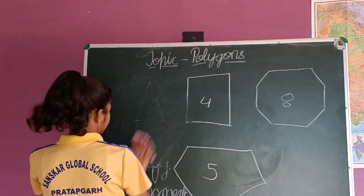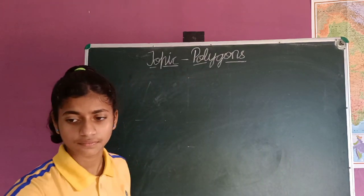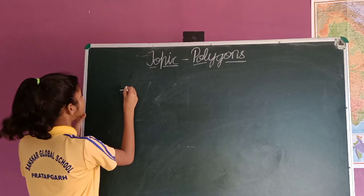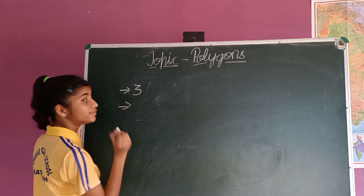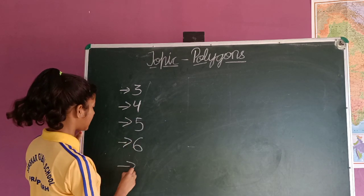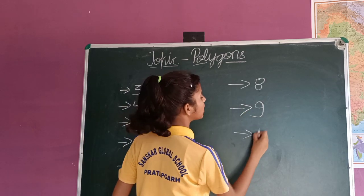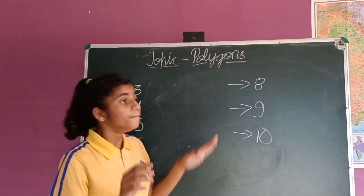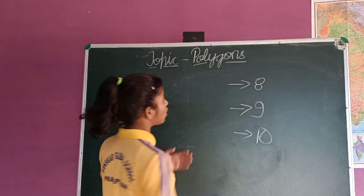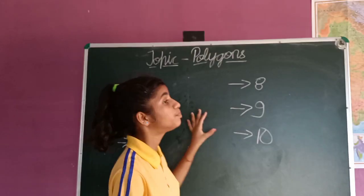Basically, polygons are classified on the basis of their number of sides. Let's learn them one by one: First is triangle with 3 sides. Quadrilateral with 4 sides. Pentagon with 5 sides. Hexagon with 6 sides. Septagon with 7 sides. Octagon with 8 sides. Nonagon with 9 sides. And decagon with 10 sides. So mainly polygons are classified as triangle, quadrilateral, pentagon, hexagon, septagon, octagon, nonagon, and decagon, and so on.